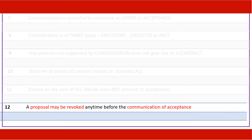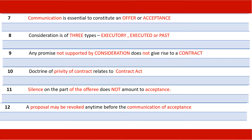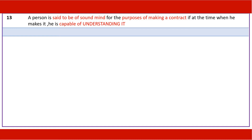A proposal may be revoked any time before the communication of acceptance. Communication is essential to constitute an offer or acceptance. Consideration is of three types: executory, executed, or past. Any promise not supported by consideration does not give rise to a contract. The doctrine of privity of contract relates to the Contract Act. Silence on the part of the offeree does not amount to acceptance. A proposal may be revoked any time before the communication of acceptance.